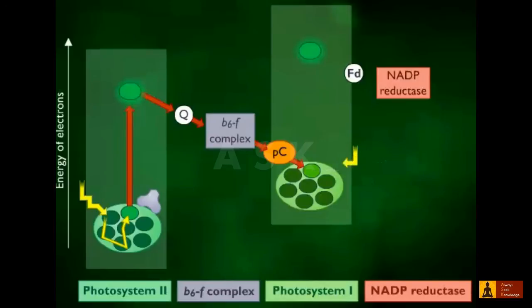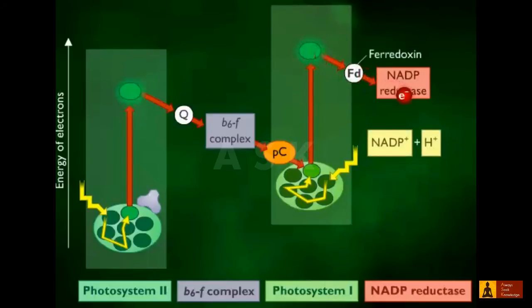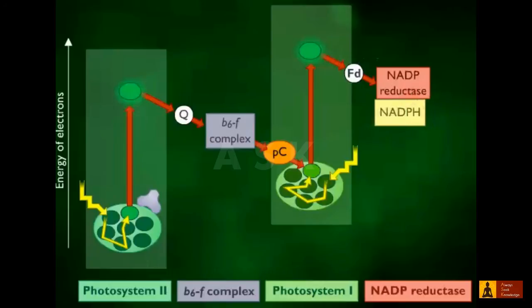When Photosystem I absorbs a photon of light, it ejects a high-energy electron. The energy from this light absorption is used to generate reducing power in the form of NADPH. The ejected electron is replaced by an electron from Photosystem II.